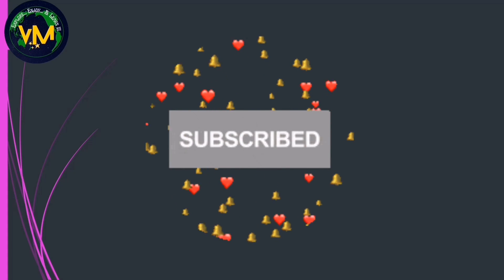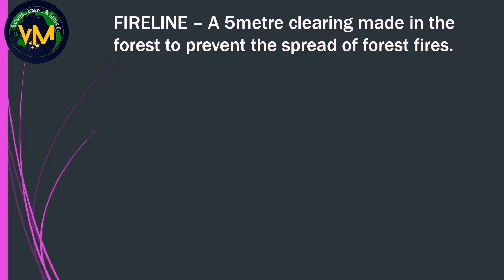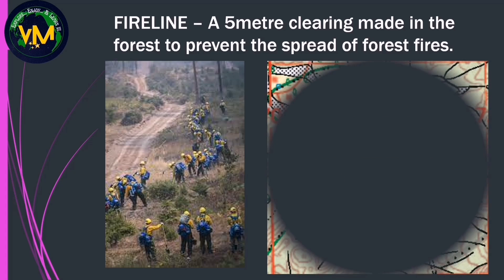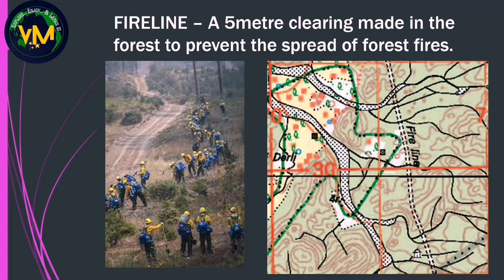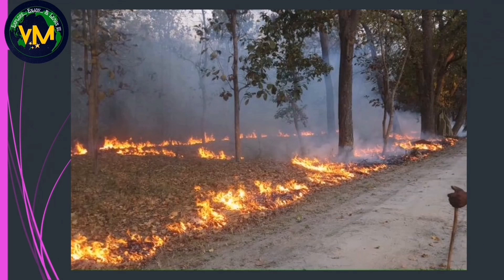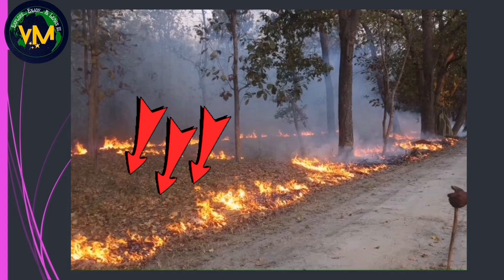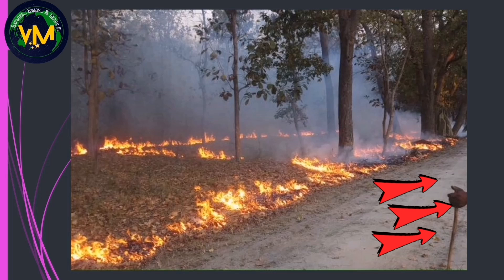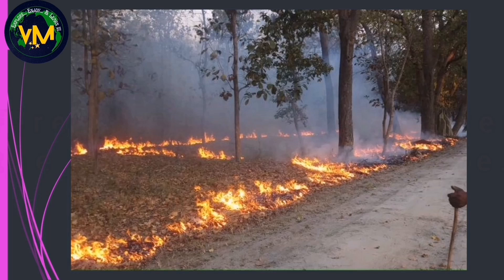There is one more word related to vegetation you might see in our maps: fire line. It is not a line but actually a 5-meter clearing — the forest is cleared of all vegetation for up to 5 meters. Why is this done? Say for example this is an entire forest. When there is fire in one part of the forest and we have a fire line, the fire cannot spread to the other part. This clearing is made to prevent the spread of forest fires.